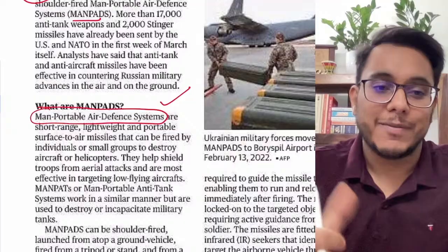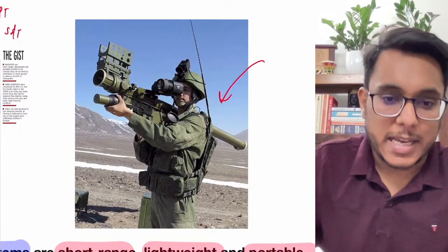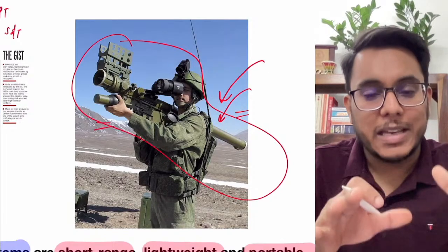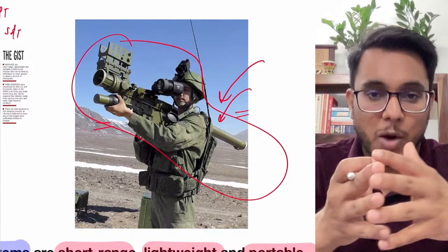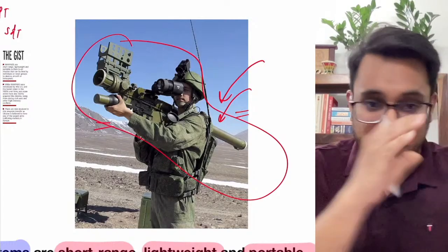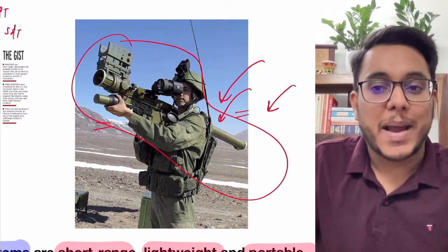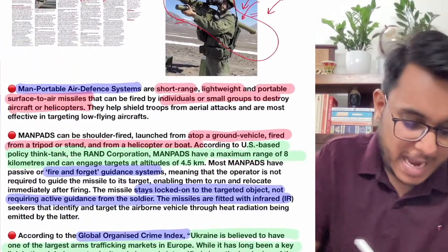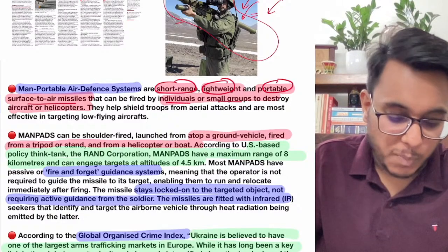When an adversary nation's aircraft is carrying out aerial bombing, these MANPADS come very handy — they can destroy such aircraft. MANPADS are short-range, lightweight, portable surface-to-air missiles that can be fired by individuals or small groups to destroy aircraft and helicopters. They can even be used atop a ground vehicle, fired from a tripod, a stand, a helicopter, or a boat — they have a multi-vector use.